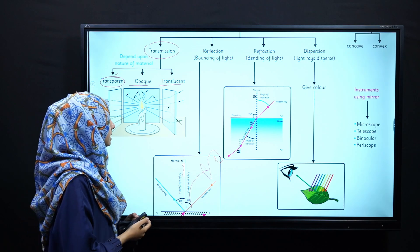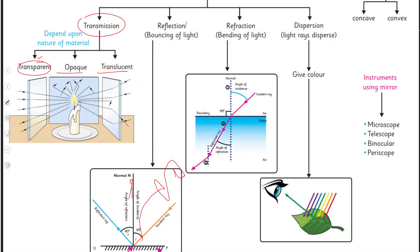Uske ilawa humne discuss kiya tha reflection ko that is defined as the bouncing of light when a ray of light hits the mirror or a shiny surface, it bounces back. Jo light hit karegi usko hum naam denge incident ray aur jo reflect back karegi bounce back hogi usko hum naam denge reflected ray and the perpendicular that is drawn to the point where the light hits that is basically an imaginary line is known as normal.